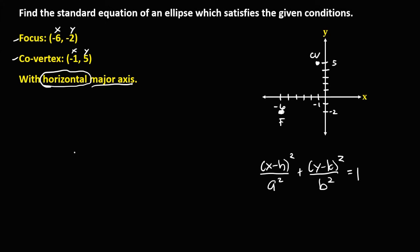First, find the coordinate of the center. Since this is a horizontal ellipse, the major axis and focus are also in horizontal position. We connect the co-vertex to find the center of the ellipse. That intersection point is the center of the ellipse. The coordinate of the center is x equals negative 1 and y equals negative 2, so center is at (-1, -2).